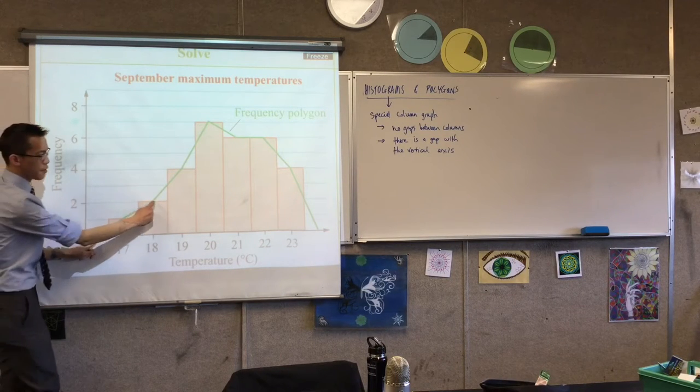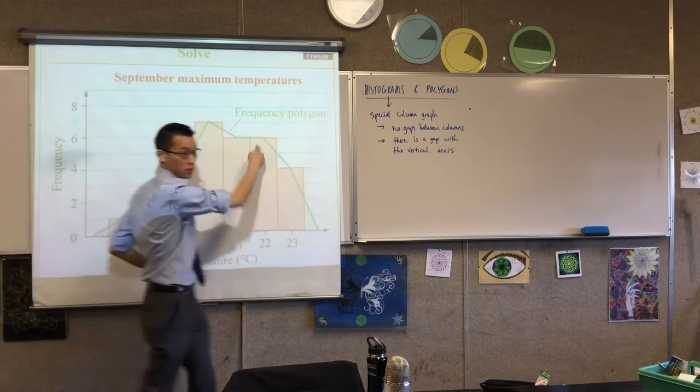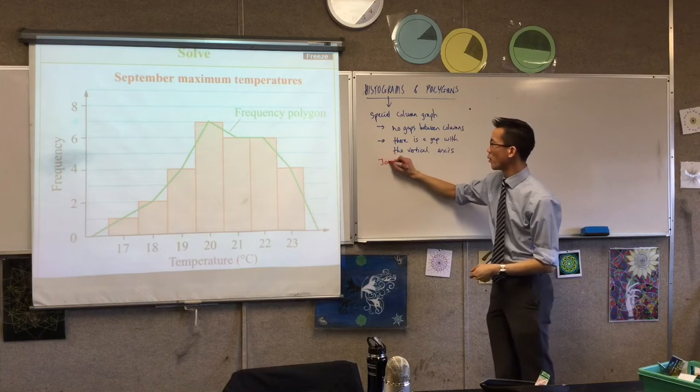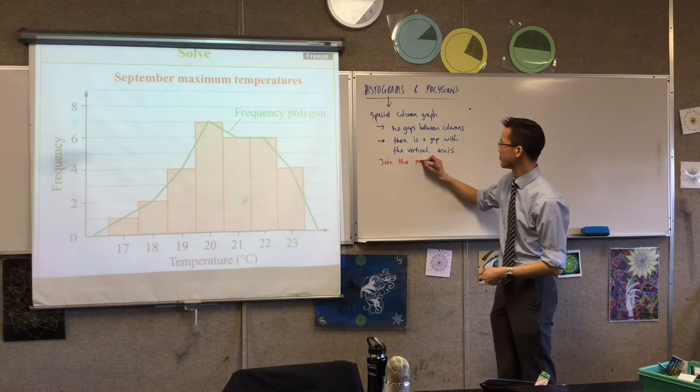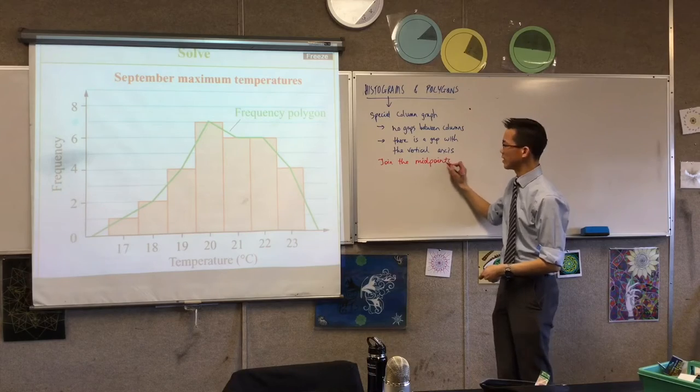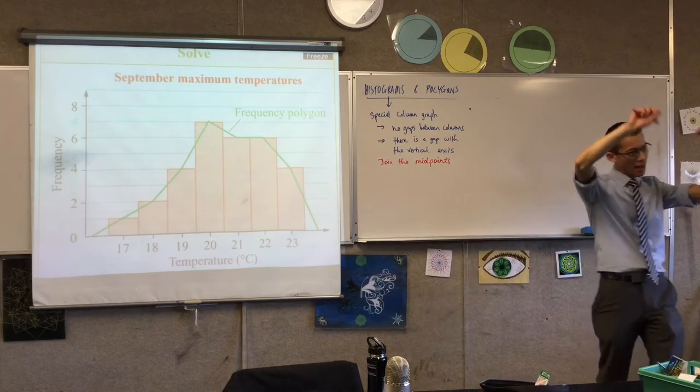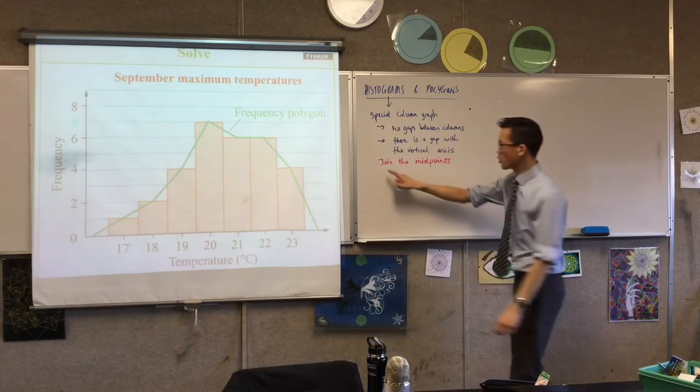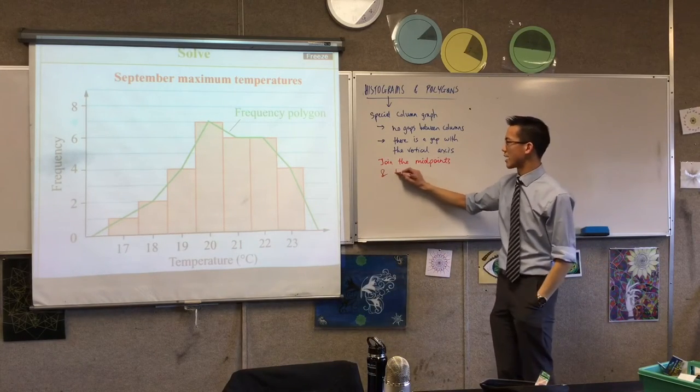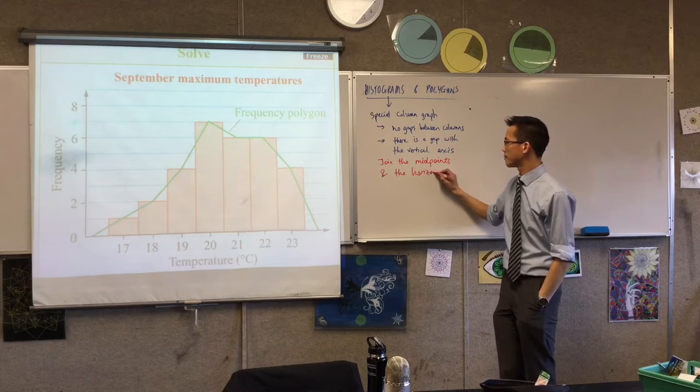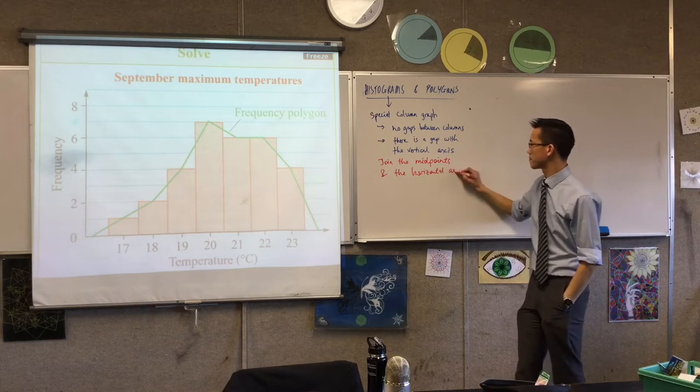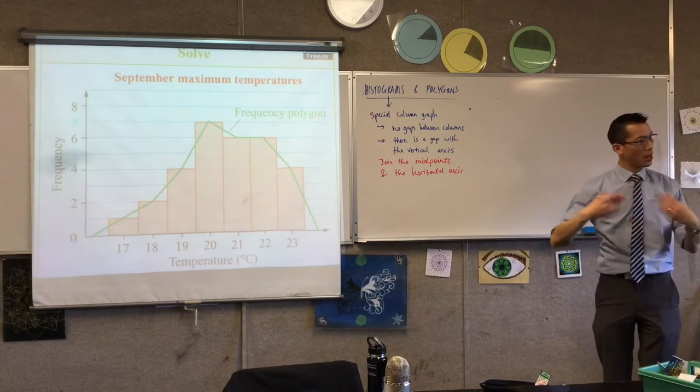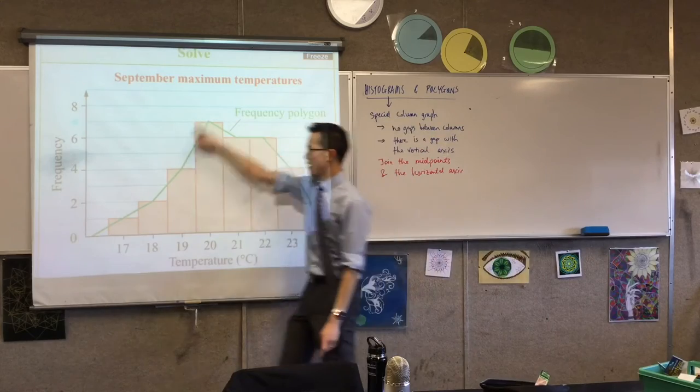Now if I take the midpoints of all of these columns, so you might want to get another column in here. So if you join the midpoints, and you also take that line which joins the midpoints and you connect it down to the horizontal axis, join the midpoints and the horizontal axis. What you've made, as is labeled up on the screen, is a frequency polygon.